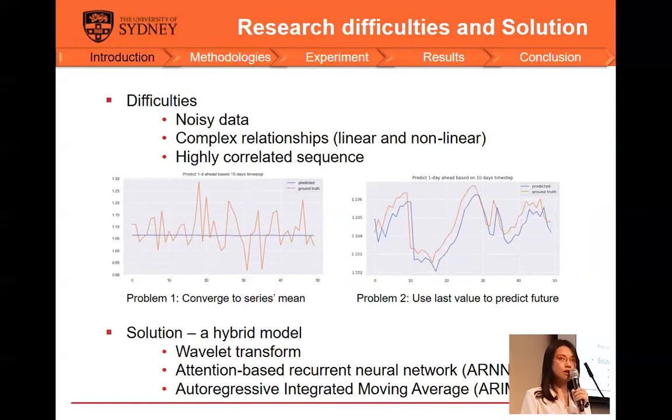When using traditional machine learning methods, the model can easily predict the mean of the series as shown in the left figure, or it tends to use the last price in the sequence to predict future values. As shown in the right figure, the consequences are two parallel lines, with the predicted line shifted slightly to the right side. To overcome the above difficulties, a hybrid model that integrates the Wavelet Transform, ARNN, and ARIMA is proposed.